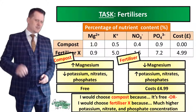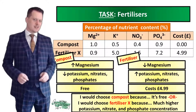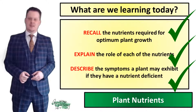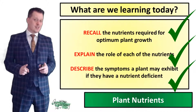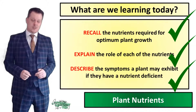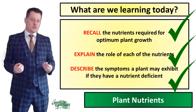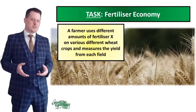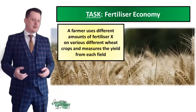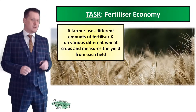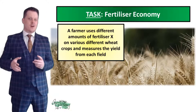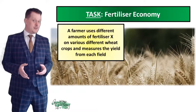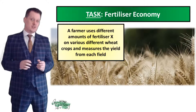Did you have a go at the challenge? How does a lack of magnesium result in plants having less glucose? If you've got an answer I'd like to hear about it in the comments below. Now we've looked at the concentration of these nutrients in two different types of fertilizers, we're going to look at fertilizer economy — how much fertilizer we need to use to get the maximum amount of crops. Here we have a farmer who uses different amounts of fertilizer X on various wheat crops and measures the yield from each field.